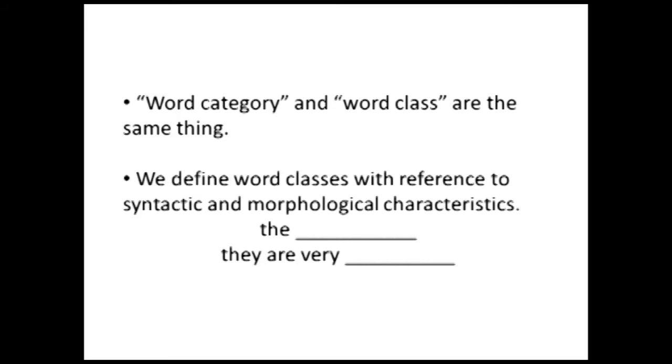Let's look at the next blank: 'They are very ___.' Think about all the words that go in there and make you feel like you're done. Pretty much any of those words are adjectives. That's a syntactic definition of an adjective. We could state these more formally — with the noun, we would say a noun takes a determinative as a dependent, or a determiner as a dependent if we're talking about function rather than word class. Categories or classes are most usefully defined when we think about where they can fit in a phrase — that's a syntactic definition — or what kind of suffix they can take, which is a morphological definition.